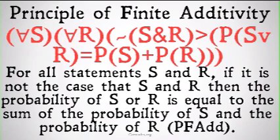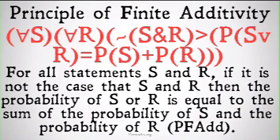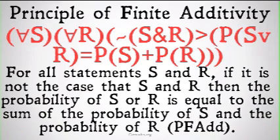However, if we do have something with mutually exclusive probabilities, let's take the idea of rolling a die. If S is the die will come up a five and R is the die will come up a six, there's no way the die can both come up a five and a six on a single roll. So the probability of either a five or a six is equal to the probability of it being a five plus the probability of being a six. The probability of rolling either a five or a six is one-third, the probability of rolling a five is one-sixth, and the probability of rolling a six is one-sixth, and one-sixth plus one-sixth equals one-third. This principle seems to work out.